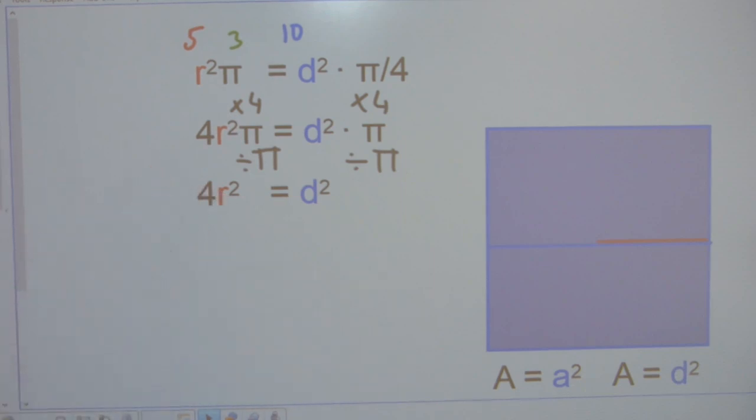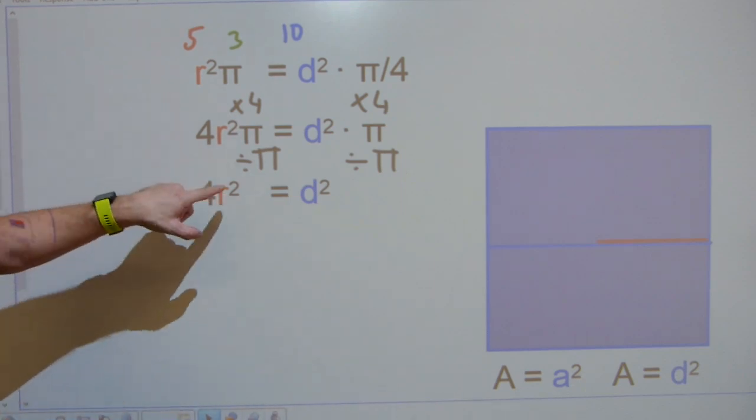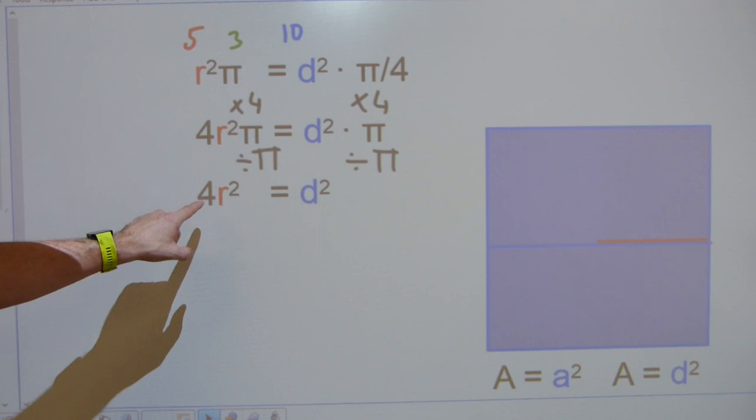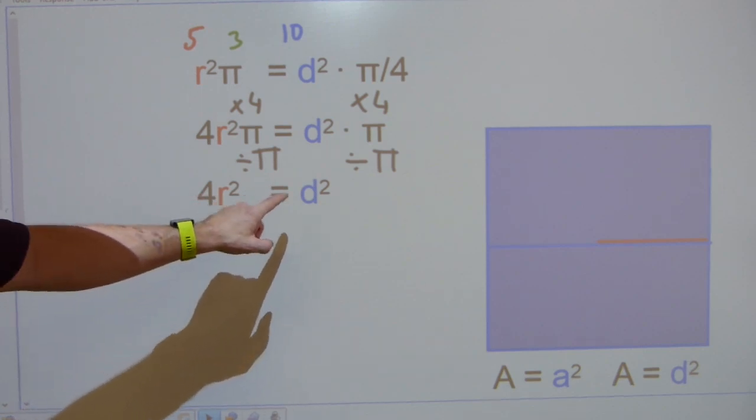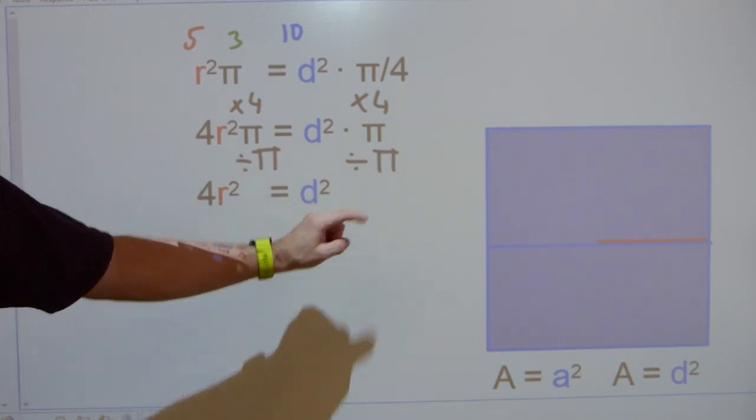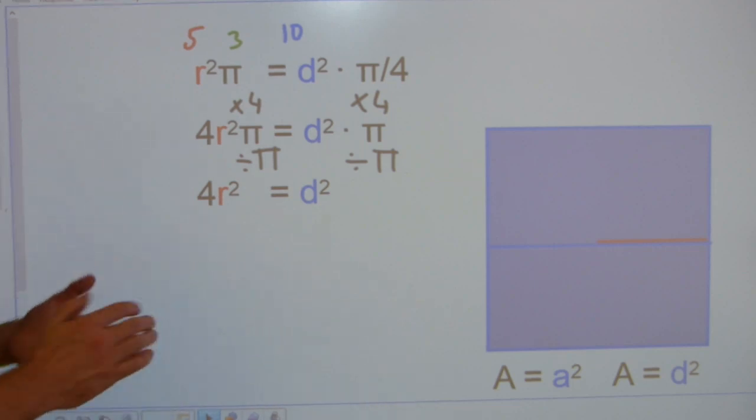Over here, same thing. And you can see at this point, that if this becomes 4 times r squared times 1, and this becomes diameter squared times 1, that's how they look like.